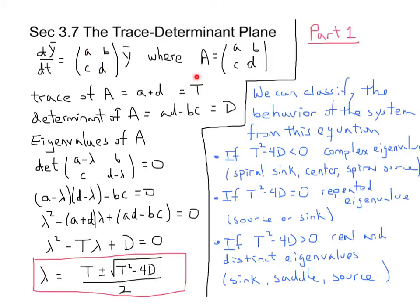The trace of matrix A is the sum of the major diagonal, a+d, and we denote it with the letter capital T. And the determinant of matrix A is the product of the two diagonals, ad-bc. And that we denote with a capital D.